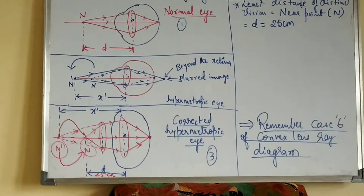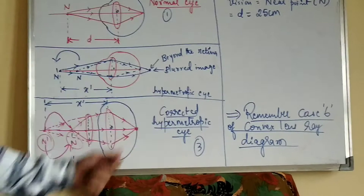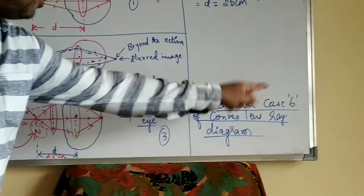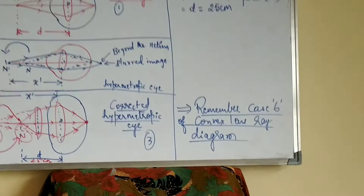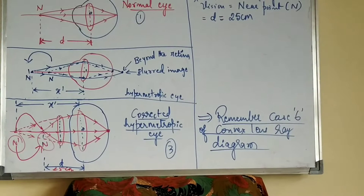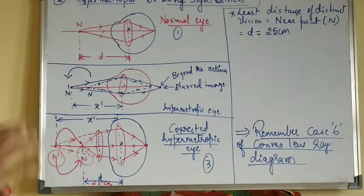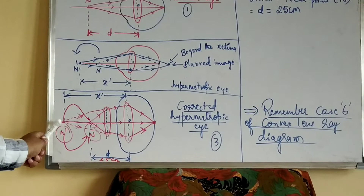To understand the correction of the hypermetropic eye, you must thoroughly know Case 6 — the last case of image characteristics in a convex lens — where the object lies between the optic center and focus, giving a virtual, erect, enlarged image formed behind the object. That concept must be remembered in order to trace the ray diagram correctly.